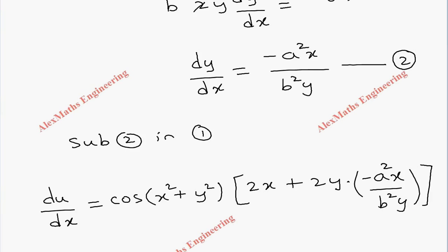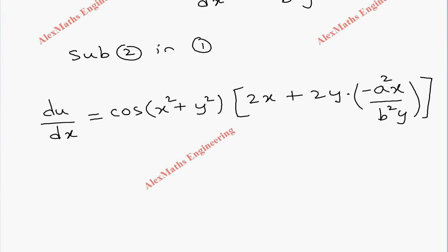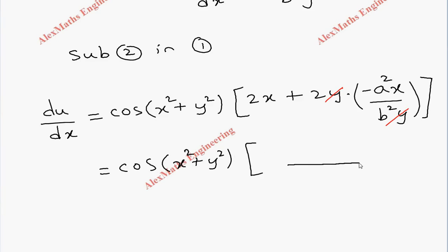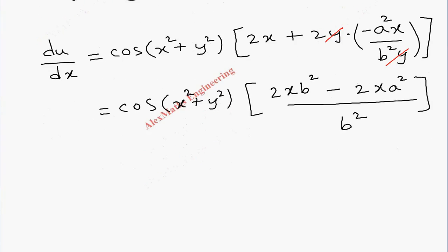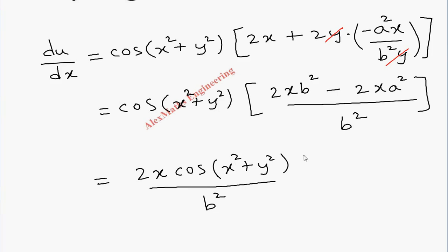Here we can cancel y and y. Taking the LCM inside the bracket — cos(x² + y²) is written as it is — we get 2x·b² minus 2x·a², all over b². Taking 2x common, the result is 2x·cos(x² + y²) times (b² minus a²), divided by b².